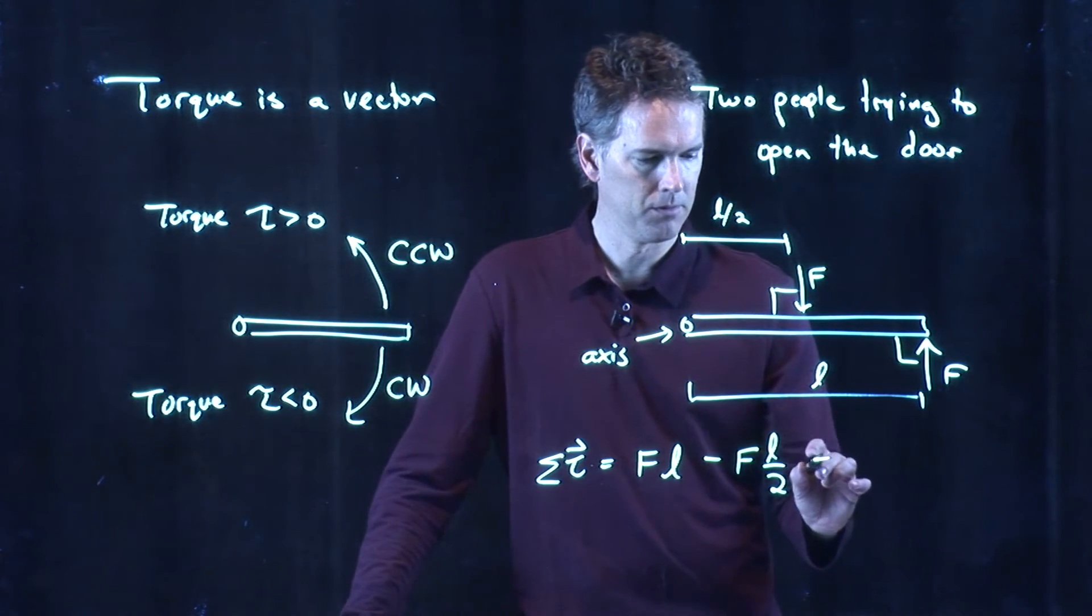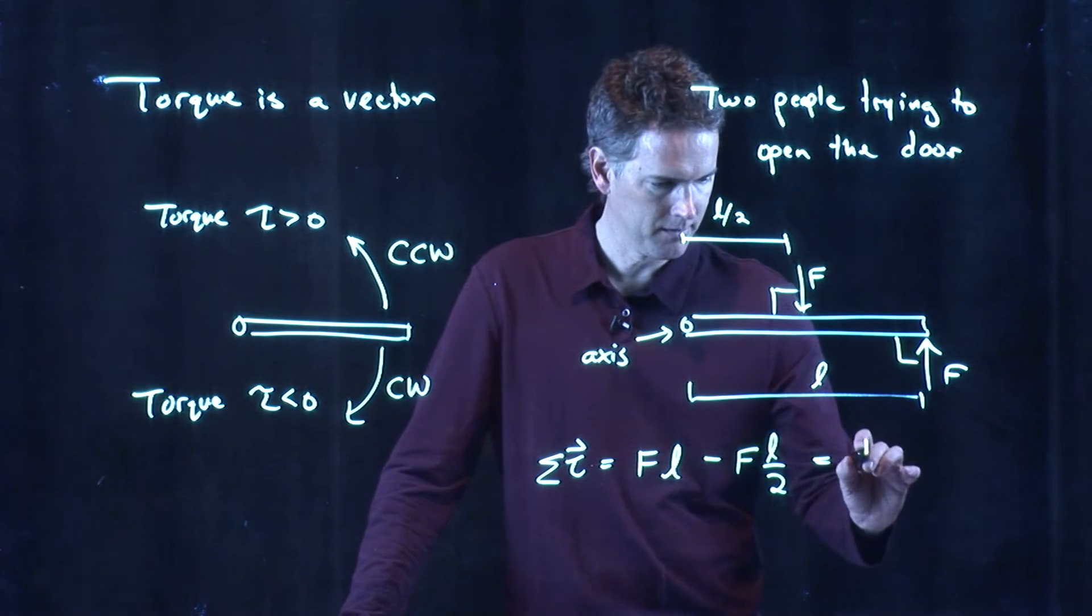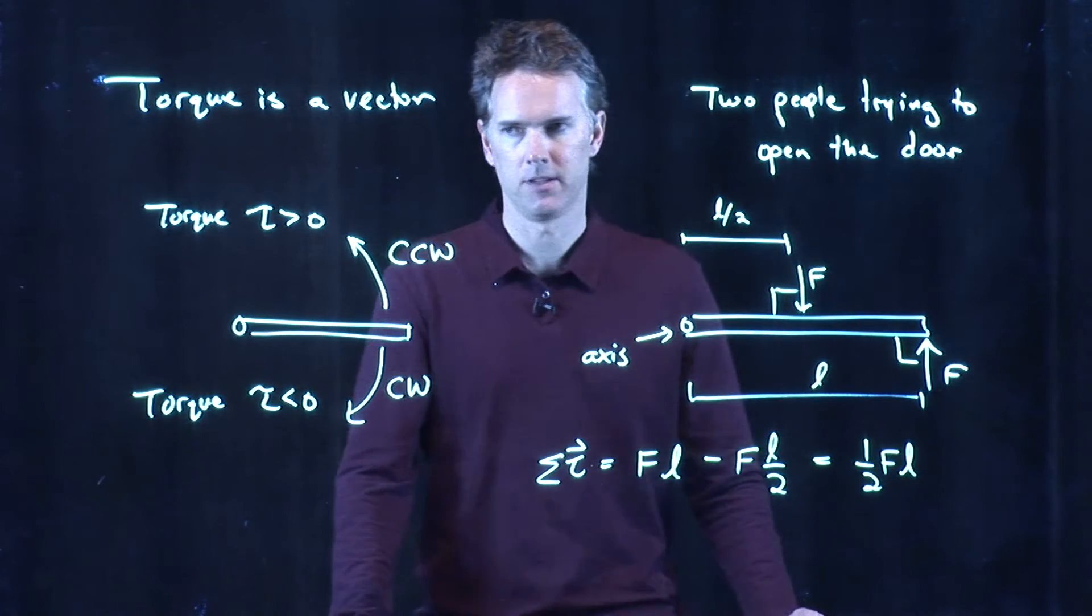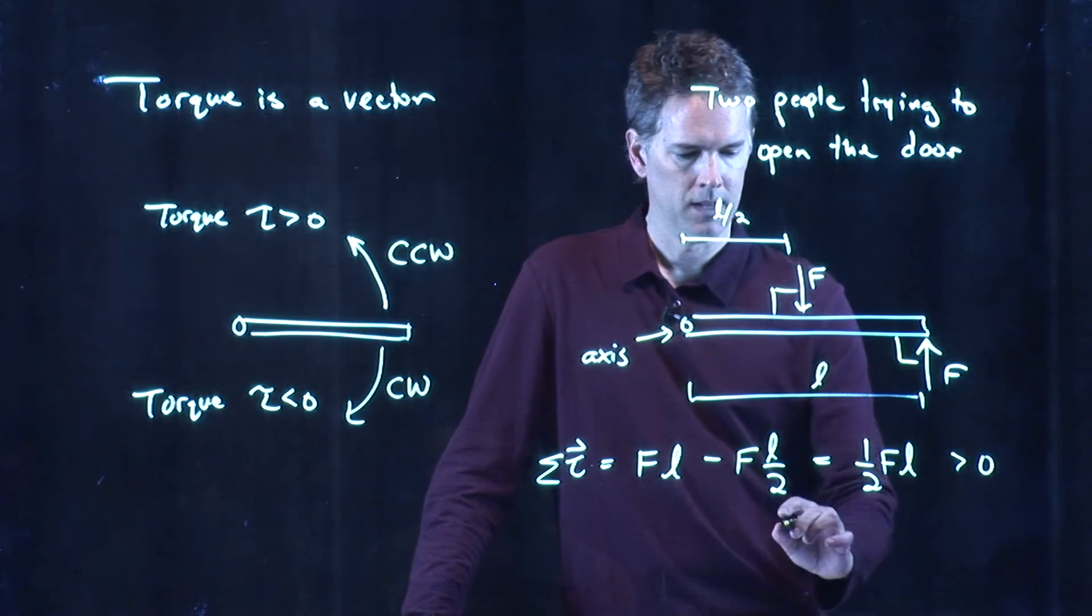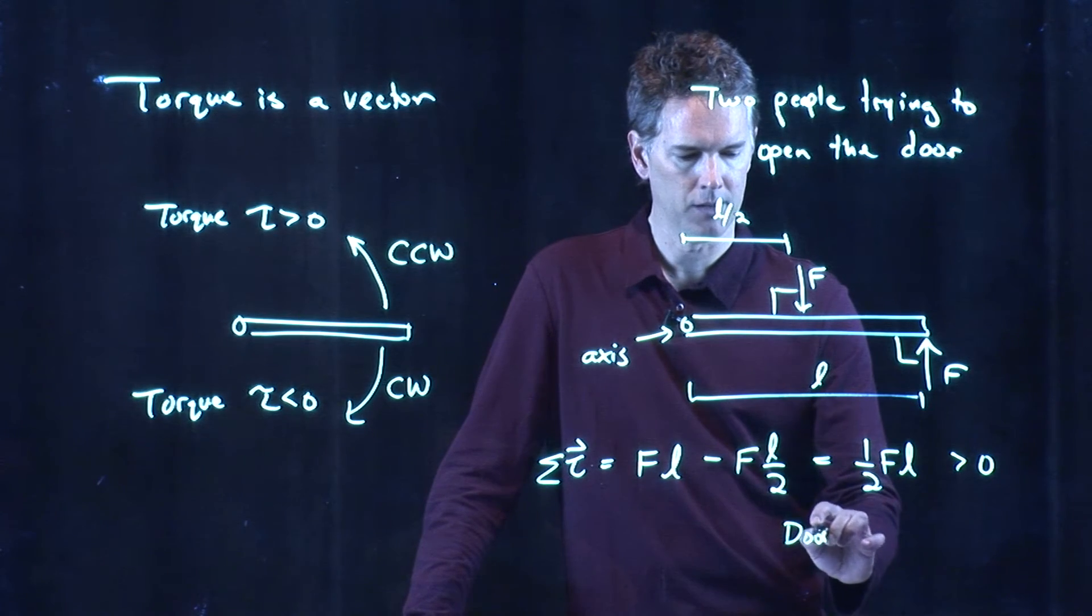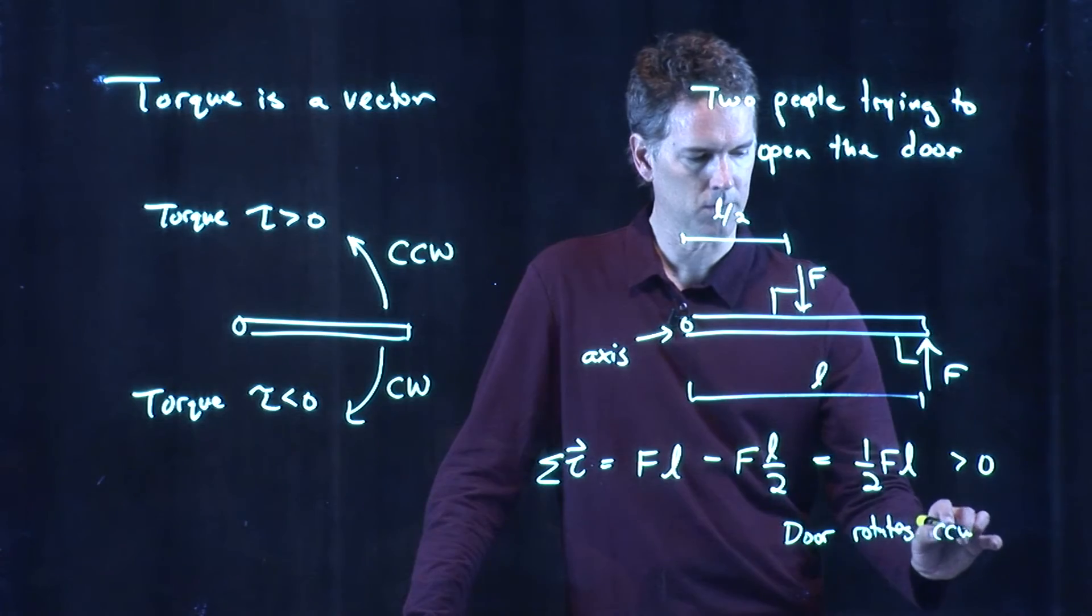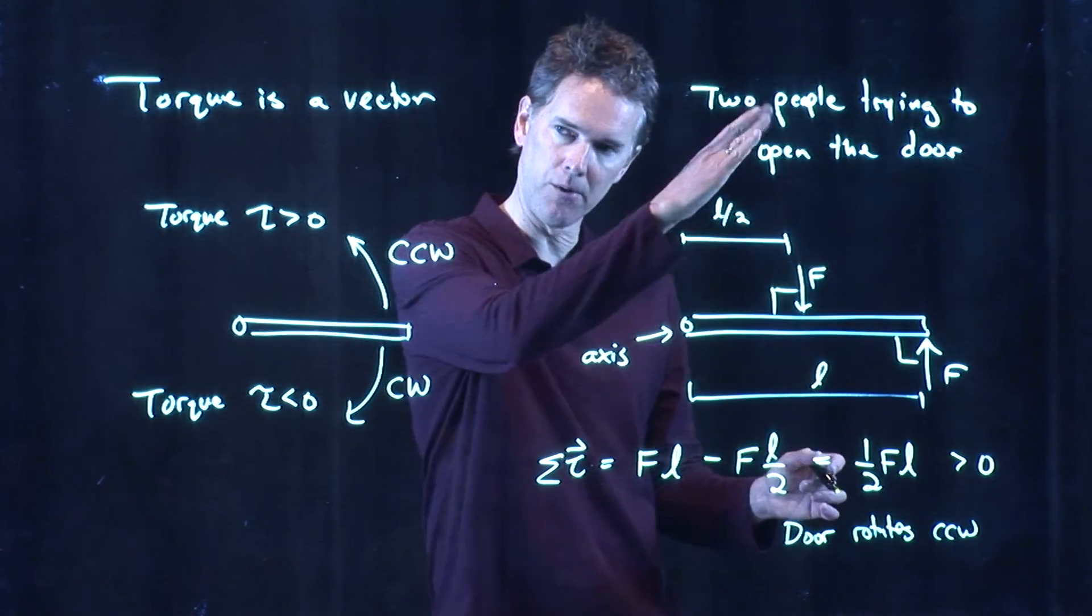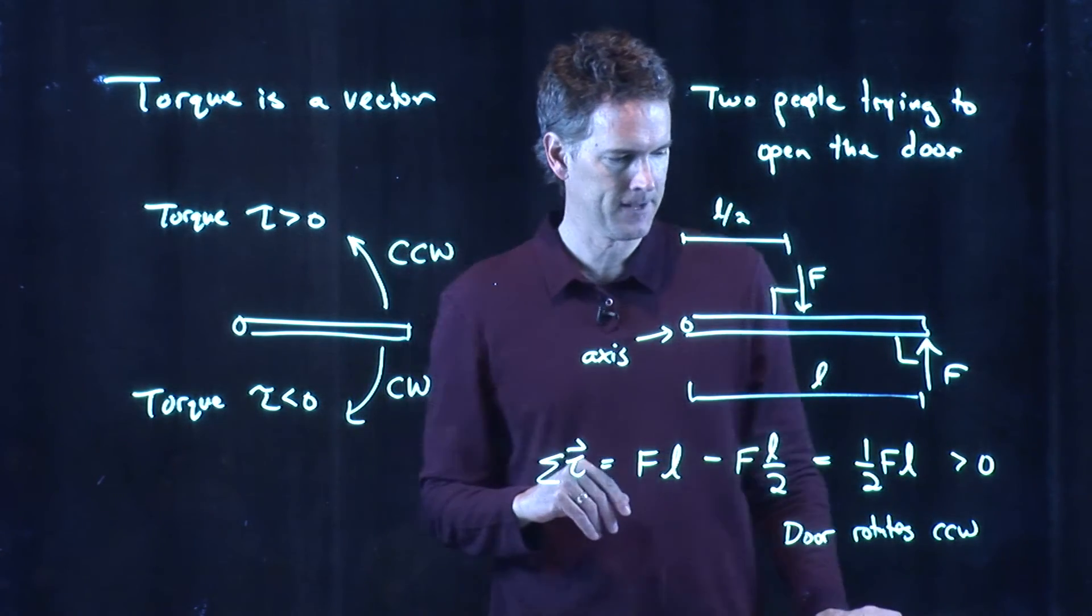And now we see what happens. We get one FL minus a half FL. And so we end up with one half F times L. This is a positive number. And so the door is going to rotate counterclockwise. This person wins. They are able to get out of the door. The other person clearly gets pushed out of the way.